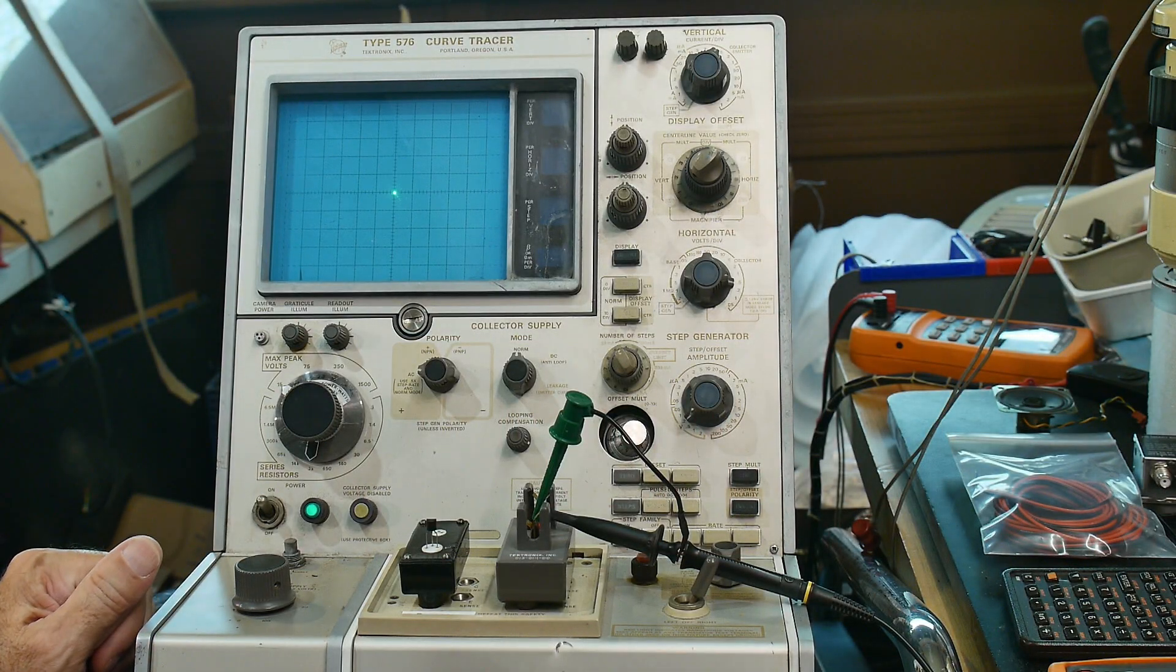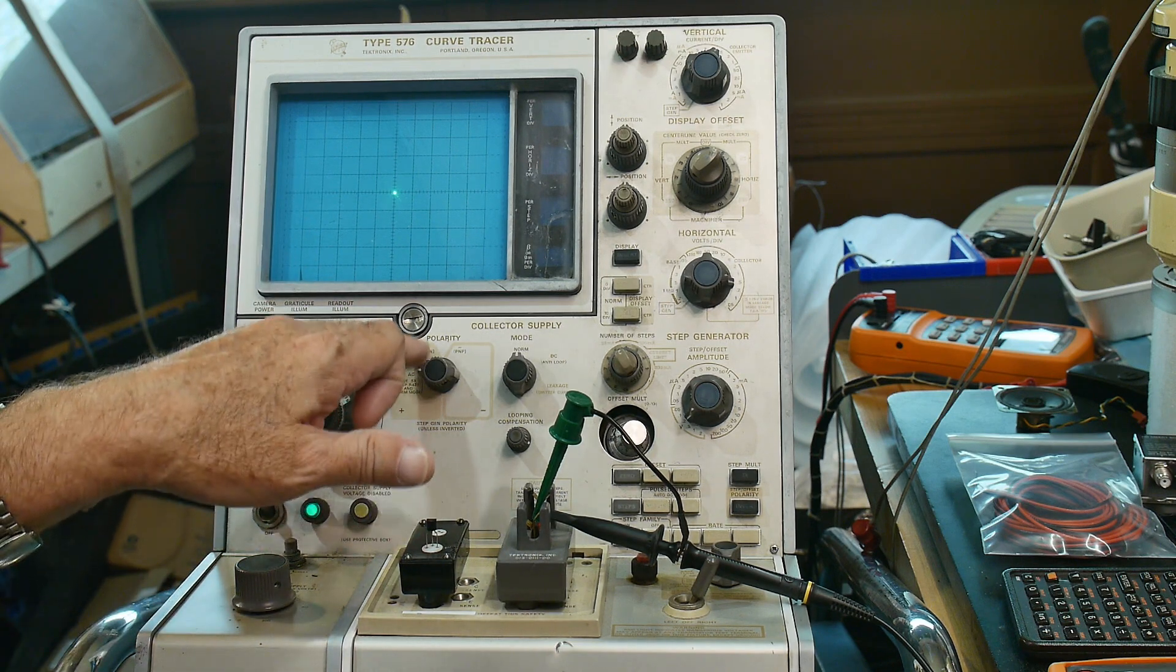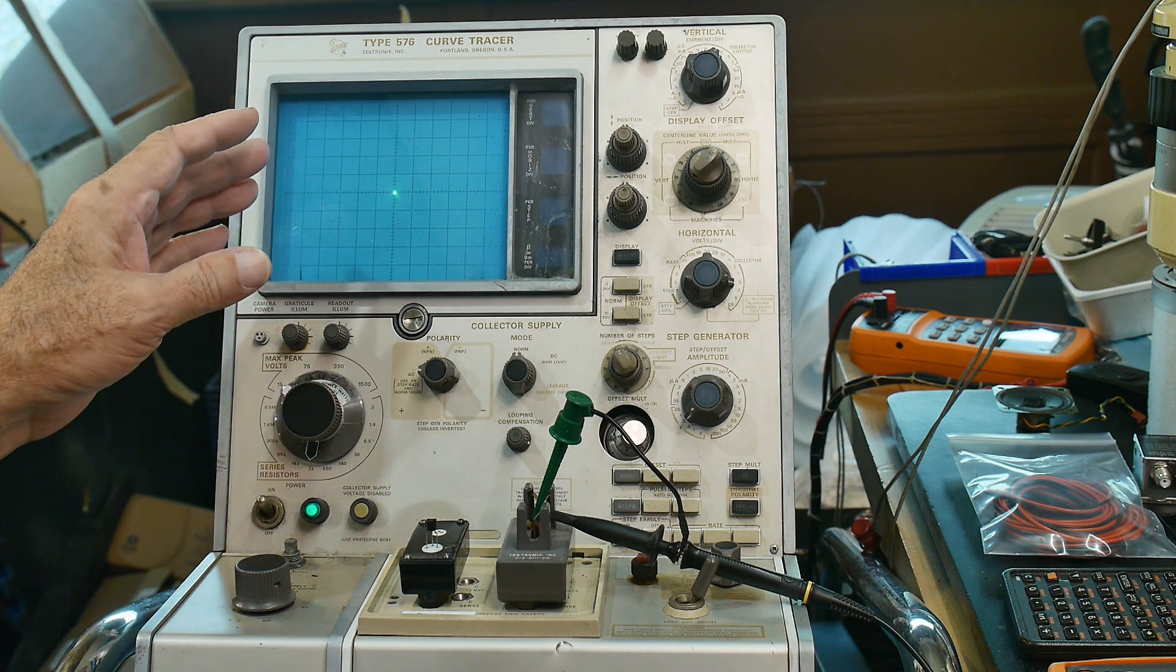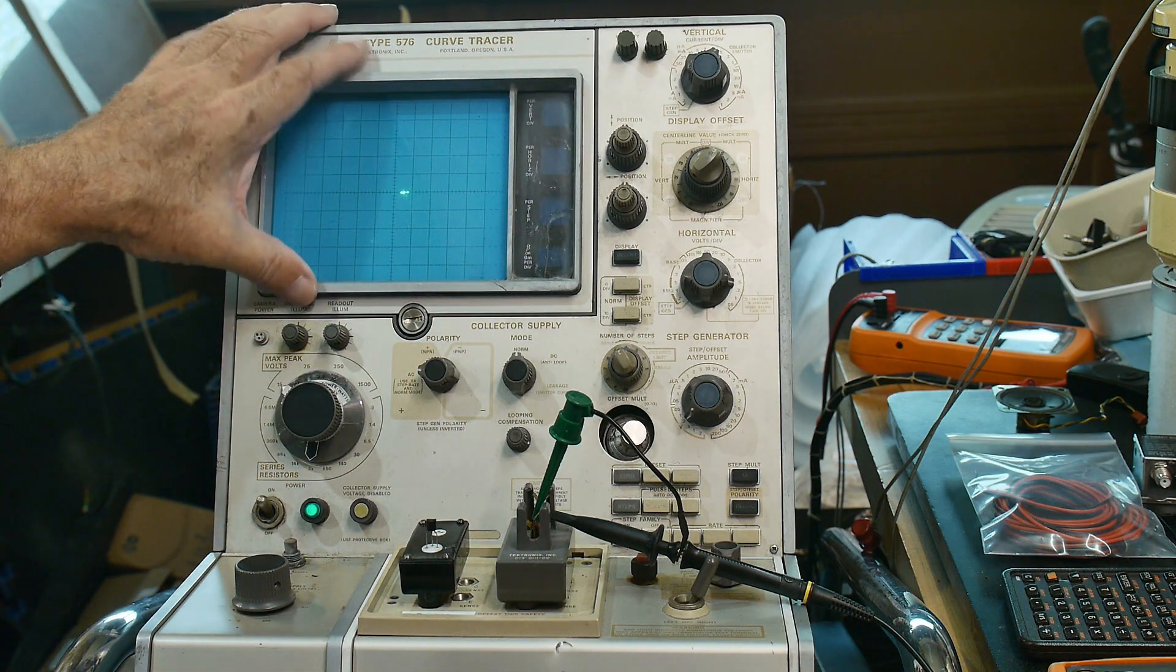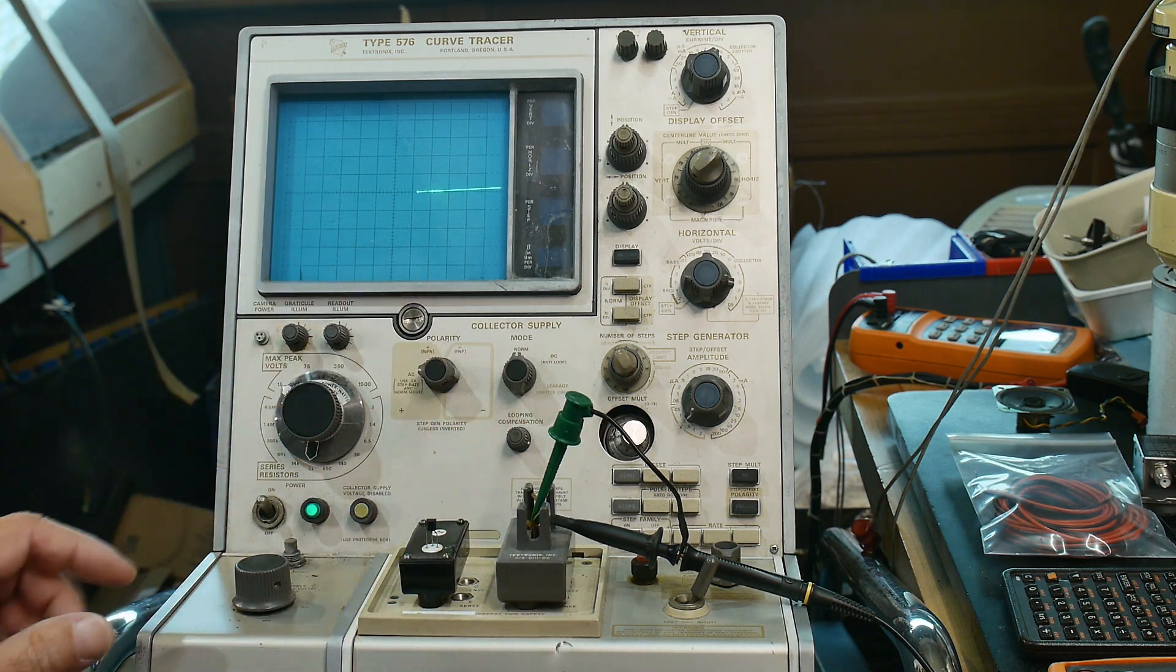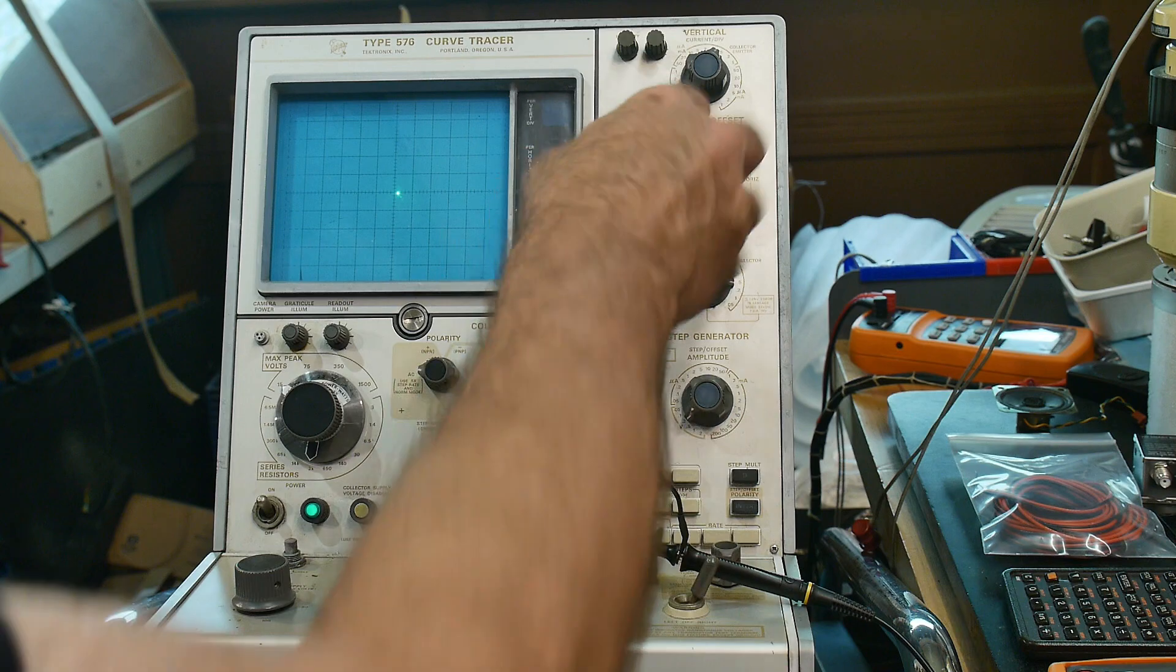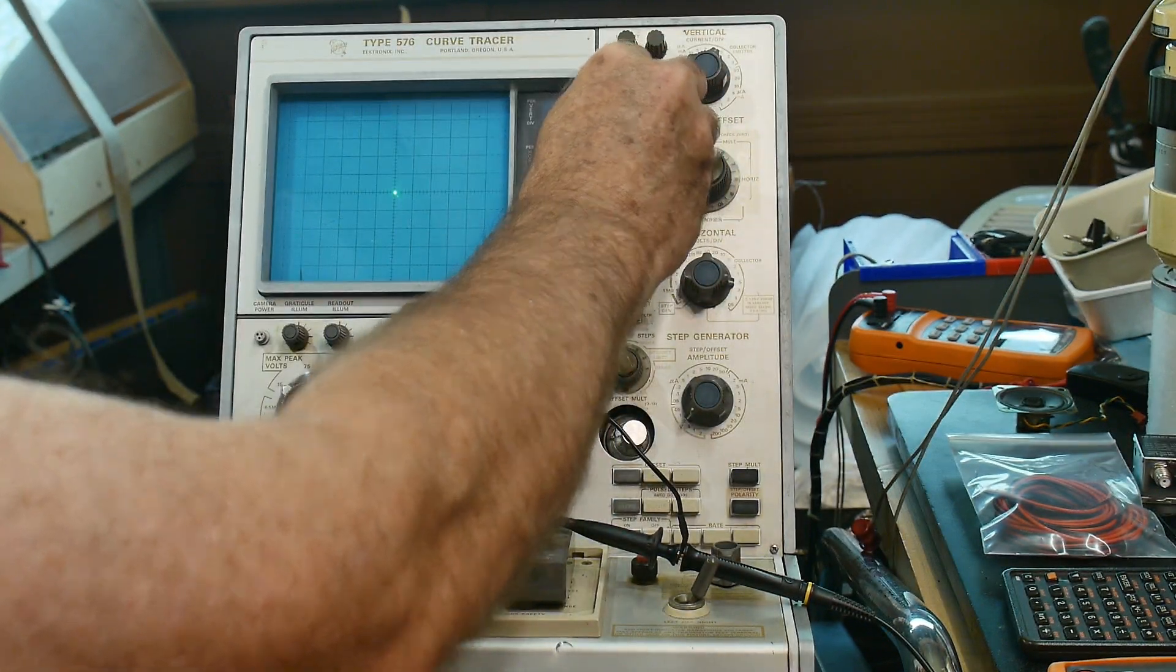Alright, a little bit of progress. I was fiddling around with it trying to use the DC mode which just goes from zero up, and now it's gone crazy again. It just does this, something flaky that I haven't quite figured out what it is.